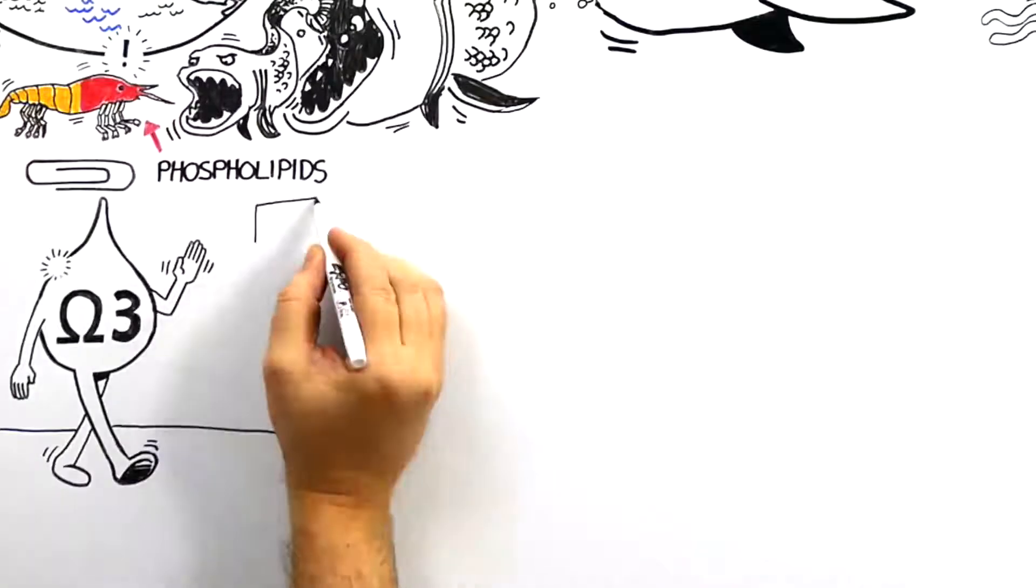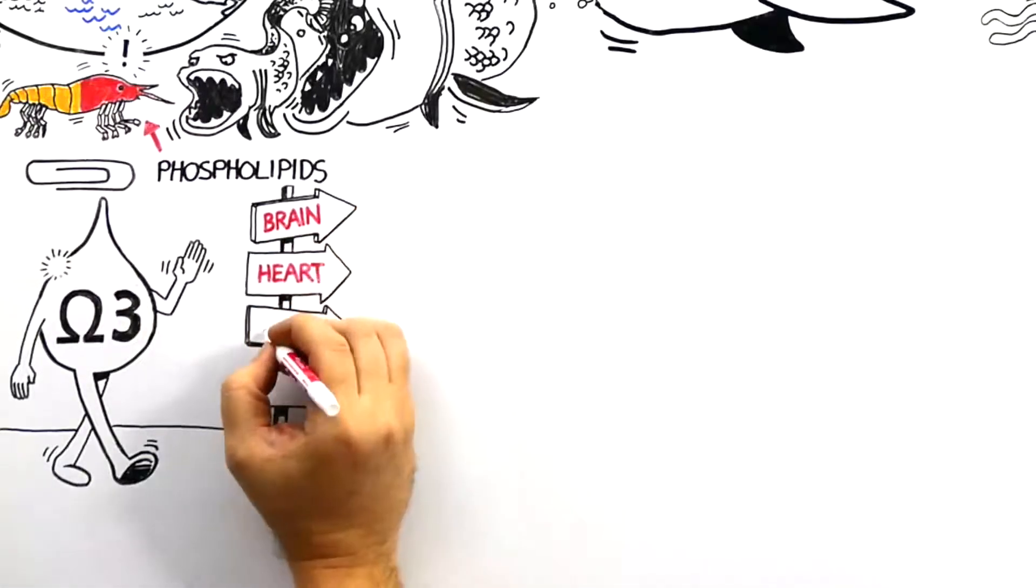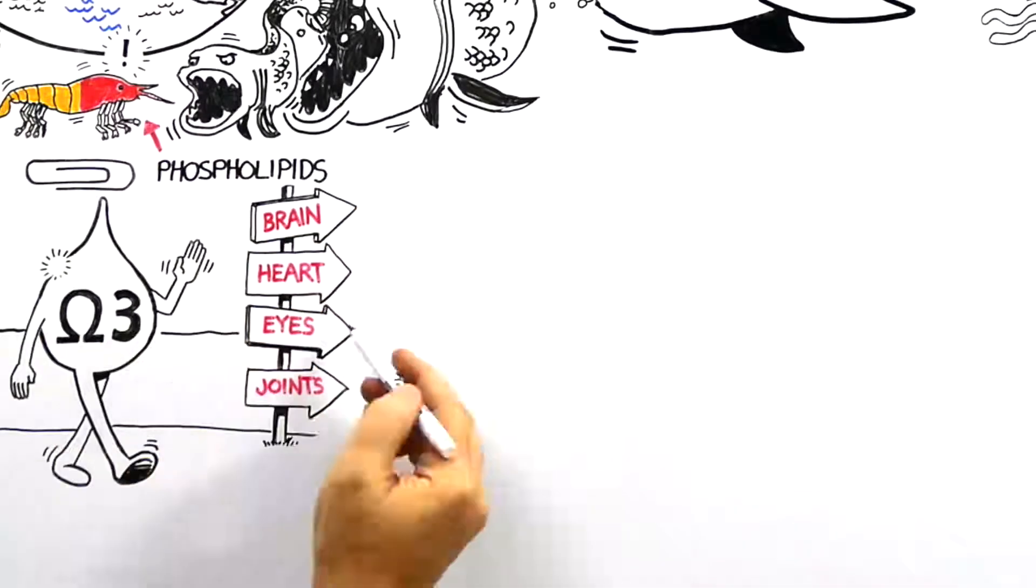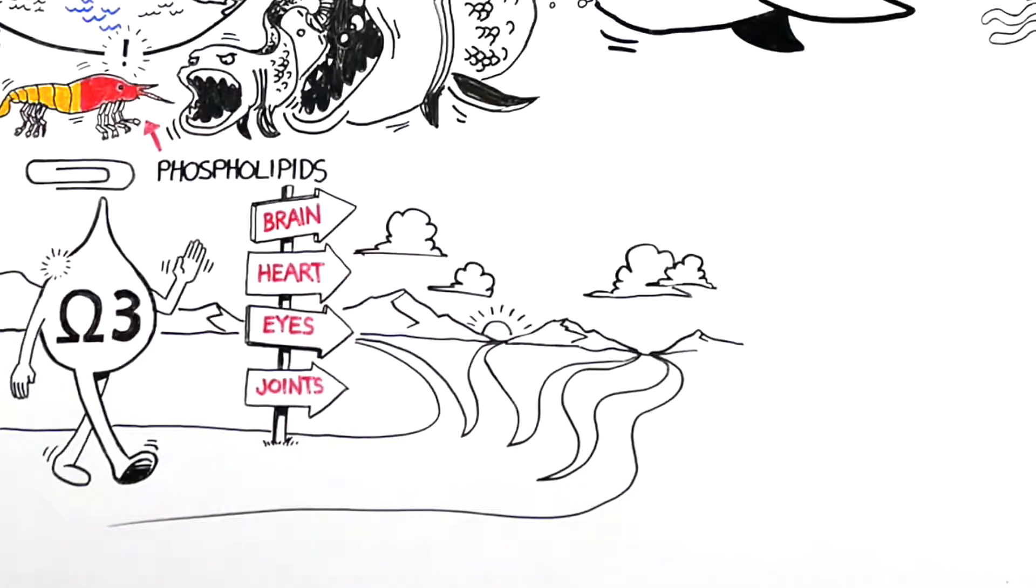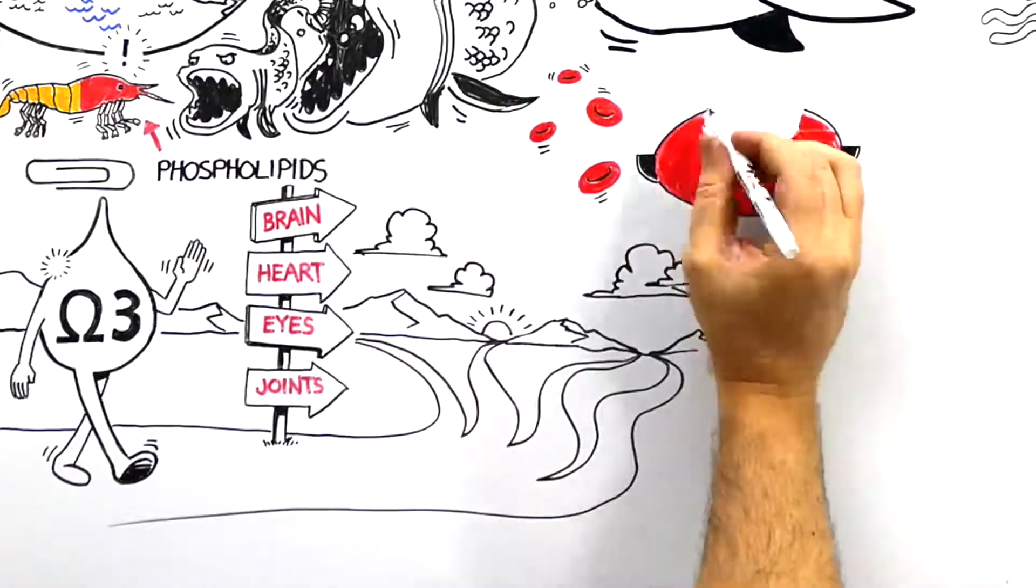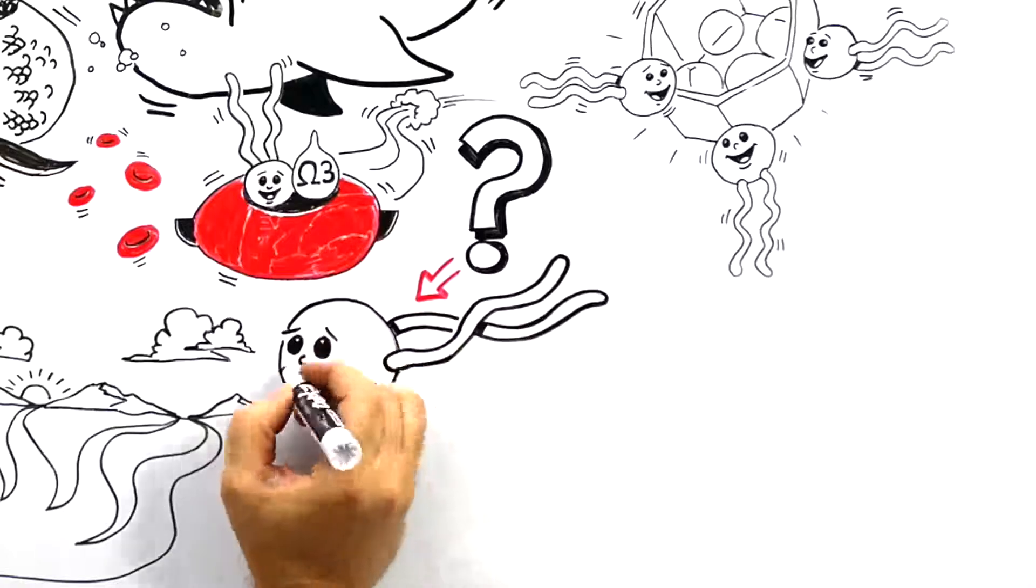Omega-3s are great if they are delivered to the places the body needs the most, such as the brain, heart, eyes, and joints. But they can't get to your tissues and organs if they don't get into your blood first. So, how can you make sure the omega-3s you take are getting into your tissues? It comes down to the phospholipids.